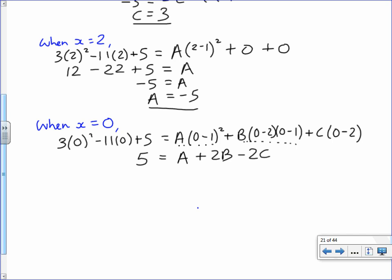There we can substitute in. C is 3 and A is negative 5. So if we add 11 to both sides, then we're going to get 16 is equal to 2B, which means that B has the value of 8.